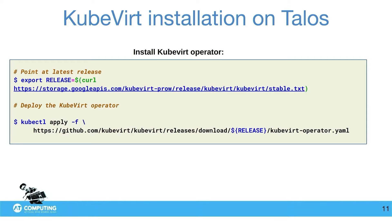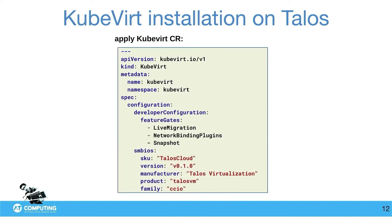How did I install the KubeVirt operator? I just apply a basic YAML — get the latest release and do kubectl apply -f for the operator. You can also install it through the Operator Lifecycle Manager, which is a product by Red Hat where you can use operators to upgrade and deploy stuff. But I like to keep it simple and use the direct YAML. After that, I deploy a basic KubeVirt custom resource, configured with feature gates for live migration, network binding plugins, and snapshots. I also configured some SMBIOS settings.